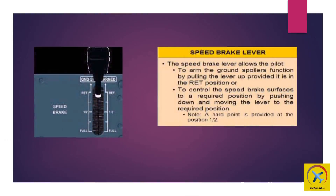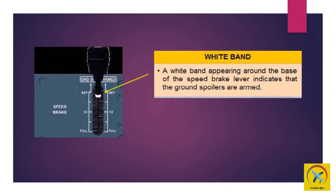The speed brake lever, located on the center pedestal, allows the pilot to arm the ground spoiler function by pulling the lever up, provided it is in the retracted position, or to control the speed brake surfaces to a required position by pushing down and moving the lever to the required position. A hard point is provided at the half position. A white band appearing around the base of the speed brake lever indicates that the ground spoilers are armed.